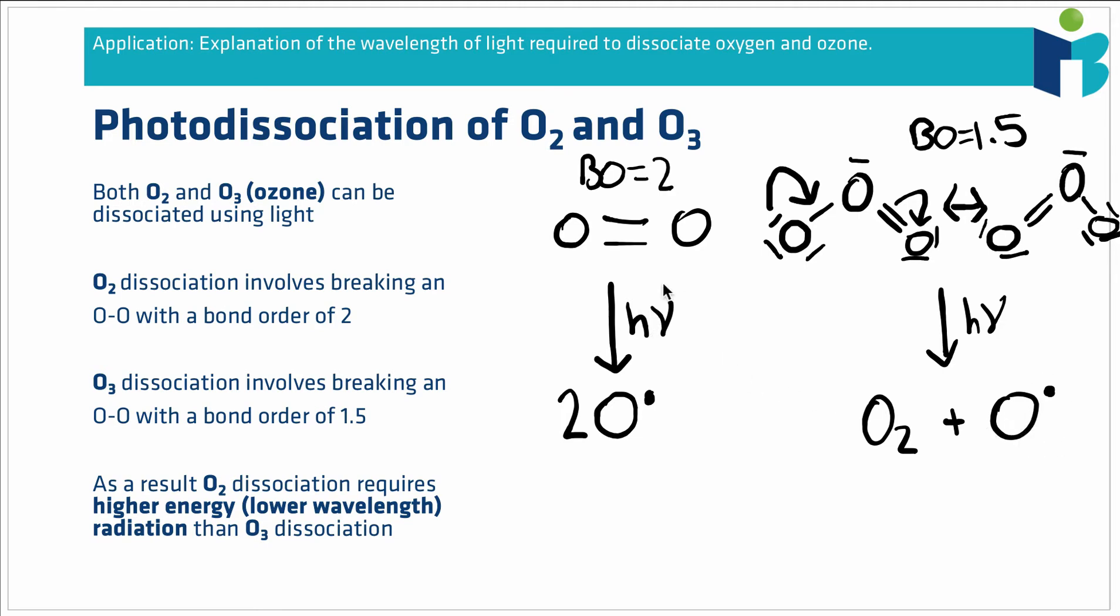What we want to do is compare the frequency required to split the O2 bond, we'll call this frequency nu O2 in subscript, to the frequency required to split this O3 bond, nu O3. Since the oxygen-oxygen bond in O2 is a double bond whereas the bonds in O3 have a bond order of 1.5, it requires less energy to break one of these ozone bonds than the O2 bond.